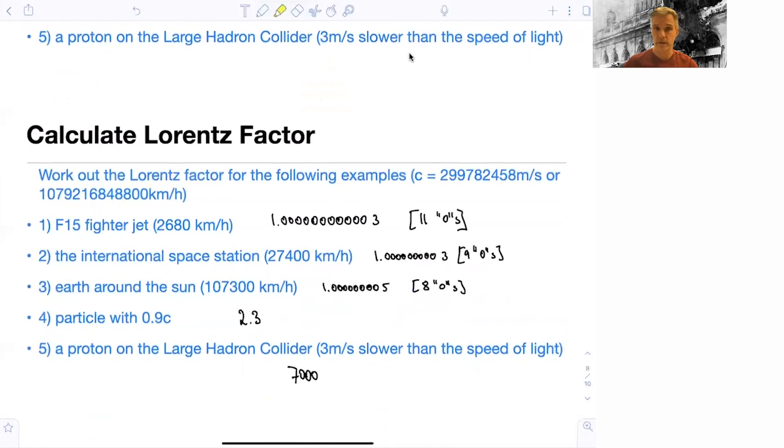So if I do this, I find for this very fast F-15 fighter jet, which moves with 2,680 kilometers per hour, that the number for gamma is 1.0000000000, which is 11 zeros, 3. So we find this very small number or number which is very close to 1. Situation for the International Space Station changes a bit, only 9 zeros. For the Earth around the Sun, the Earth is really fast, travels a long distance. Every year you travel once around the Sun, and every year you get older, you have a lot of mileage on your back. Here you have eight zeros. Particle which moves with 0.9 times the speed of light, here the gamma factor is very different from one, it's 2.3. And the protons we have at the LHC, they have a gamma factor of 7000. So you see, once you get close to the speed of light, the gamma factor approaches large numbers. And that's where our relativistic effects really are visible.